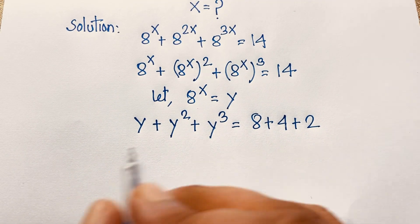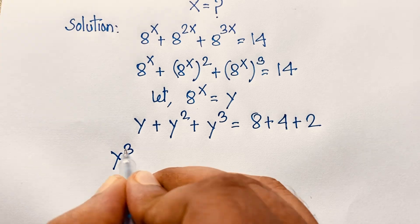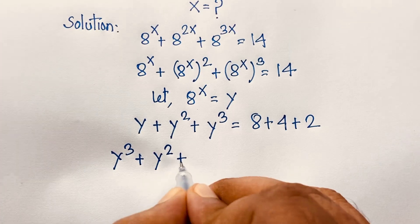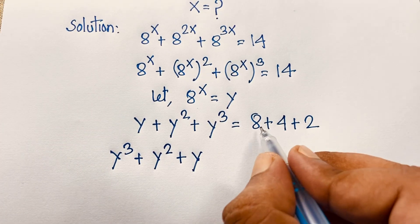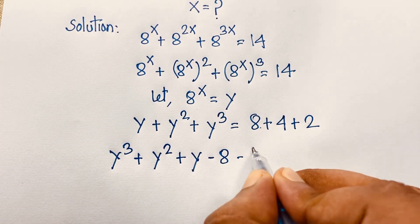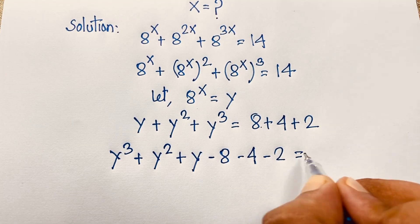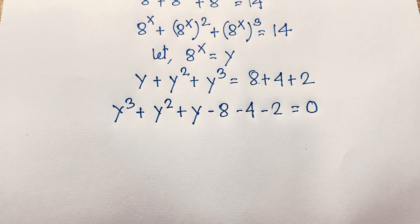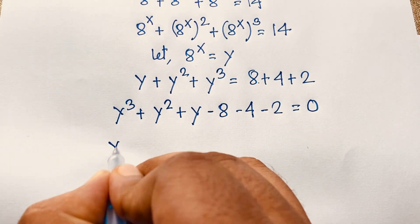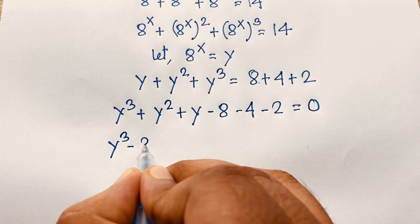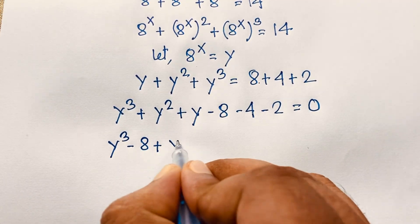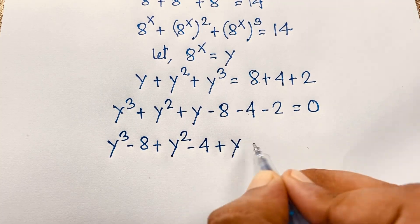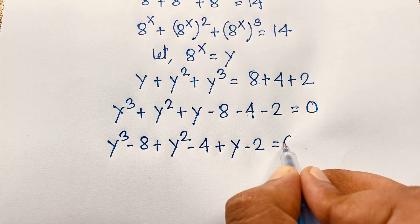We now rearrange. Moving all terms to one side: y³ + y² + y - 14 = 0, which becomes y³ - 8 + y² - 4 + y - 2 = 0. Solving this step by step: y³ - 8 + y² - 4 + y - 2 = 0.